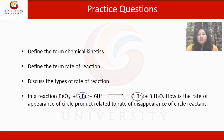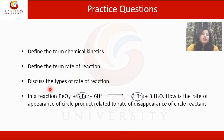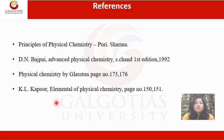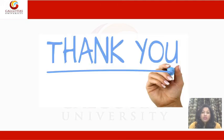Based on this presentation, some practice questions are: define the term chemical kinetics; define the term rate of reaction; discuss the types of rate of reaction; and for the reaction BrO₃⁻ + 5Br⁻ + 6H⁺ → 3Br₂ + 3H₂O, how is the rate of appearance of the product related to the rate of disappearance of the reactant? These are some references used in this lecture. Thank you.